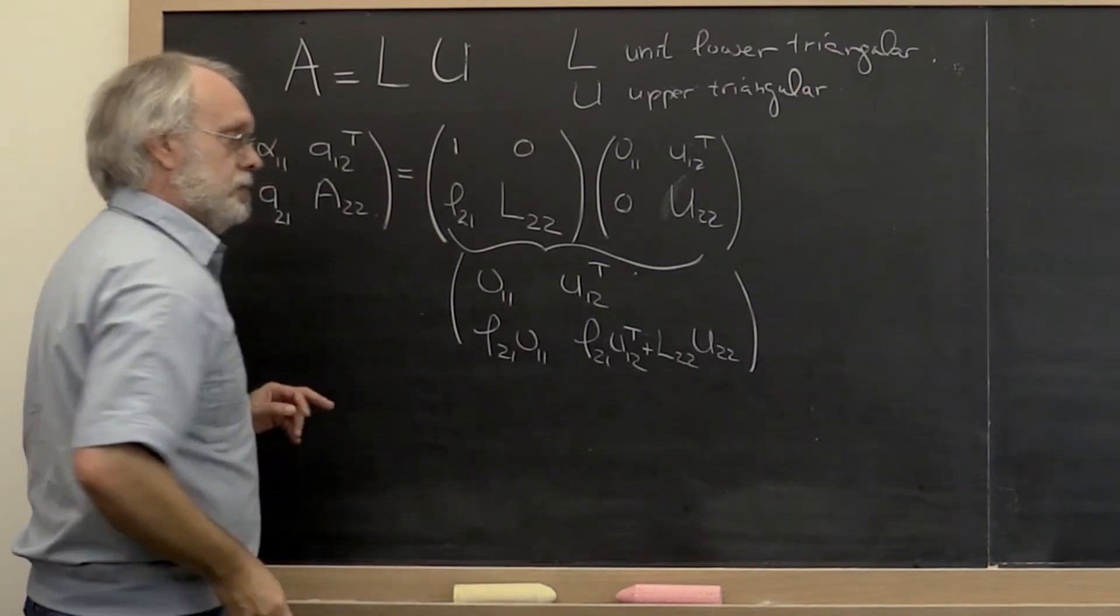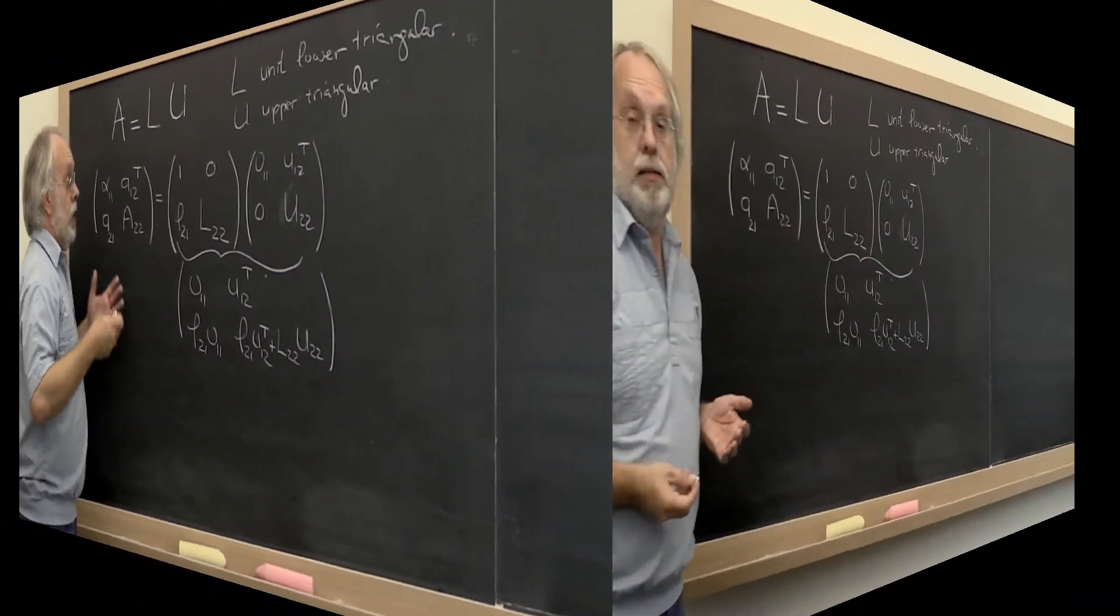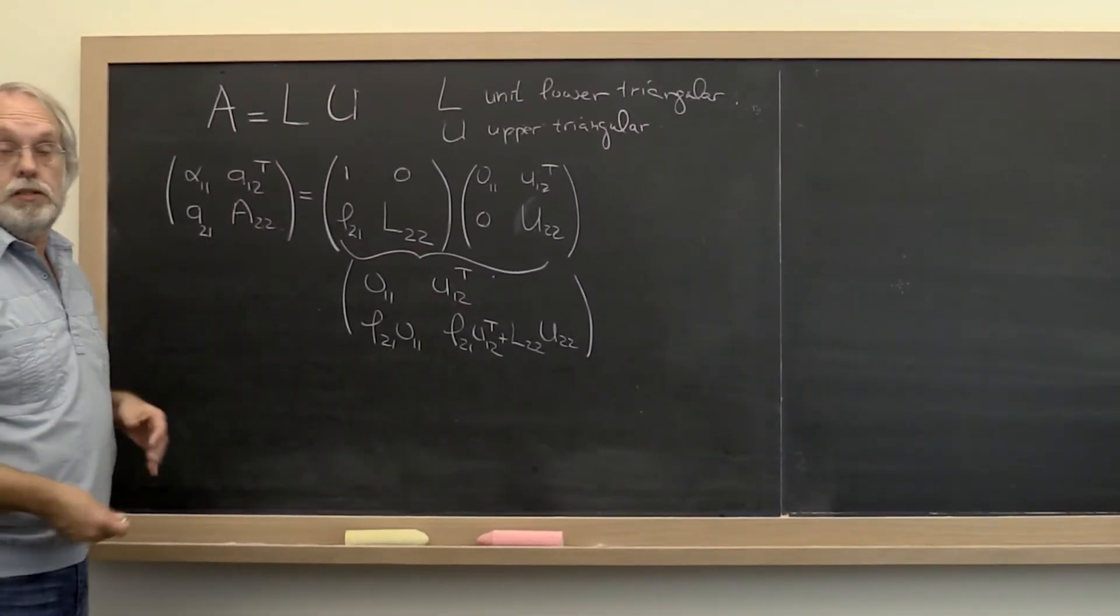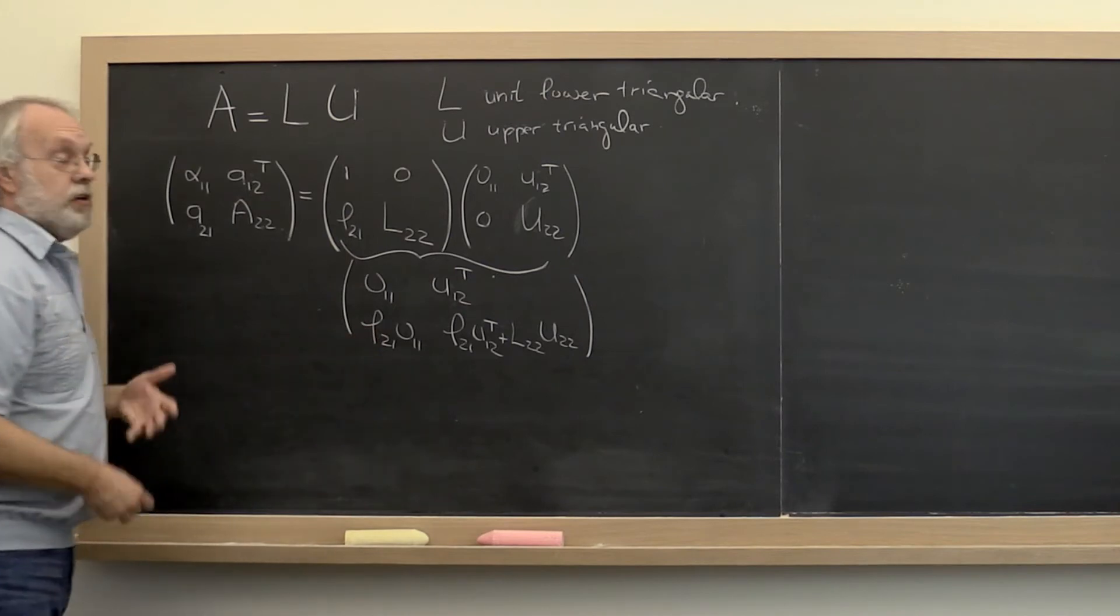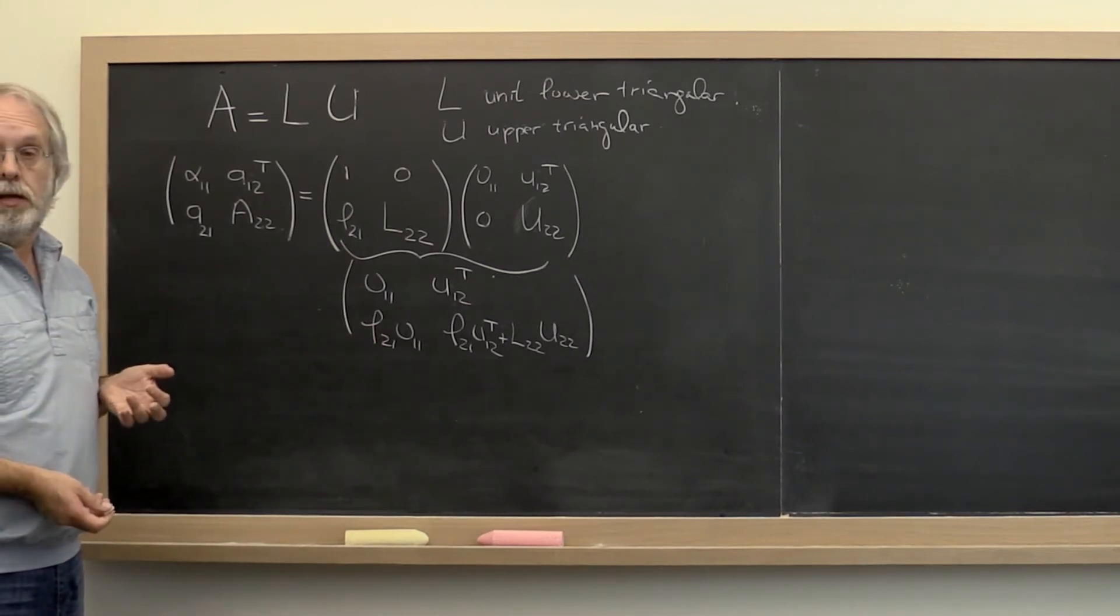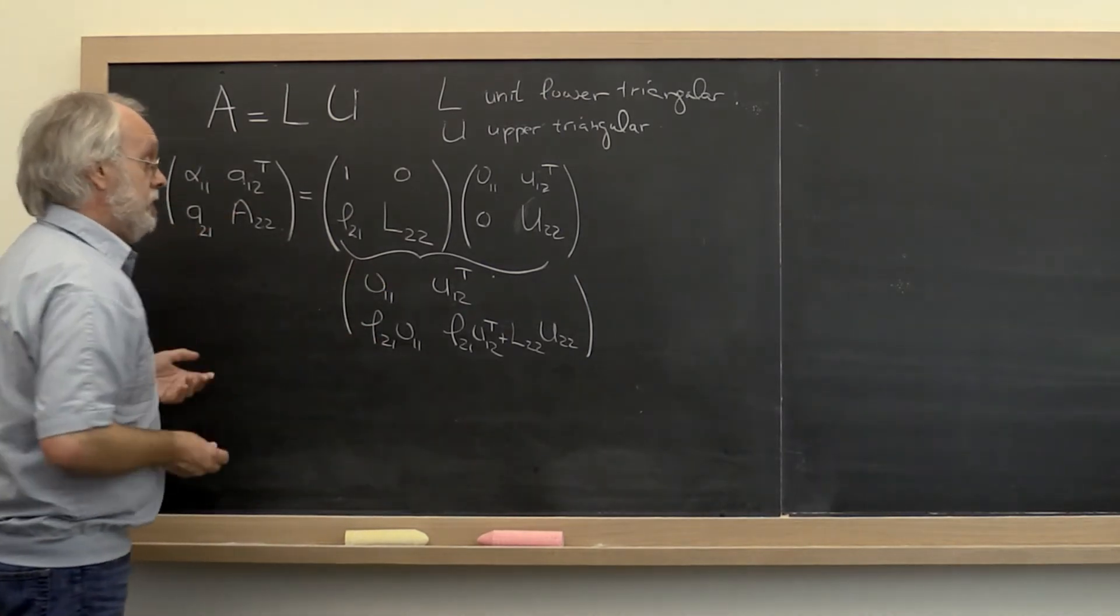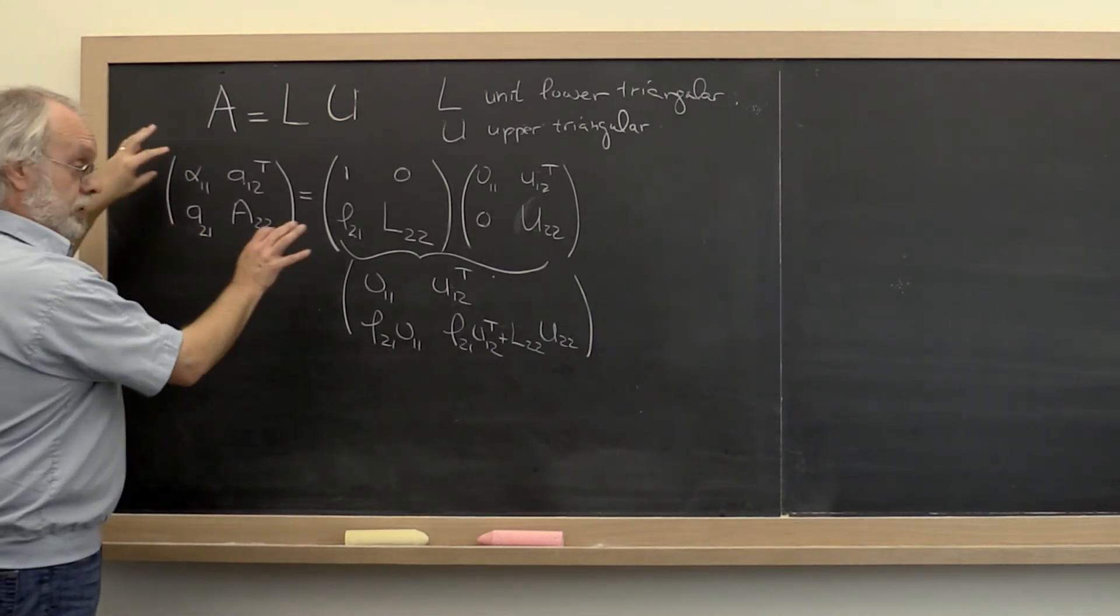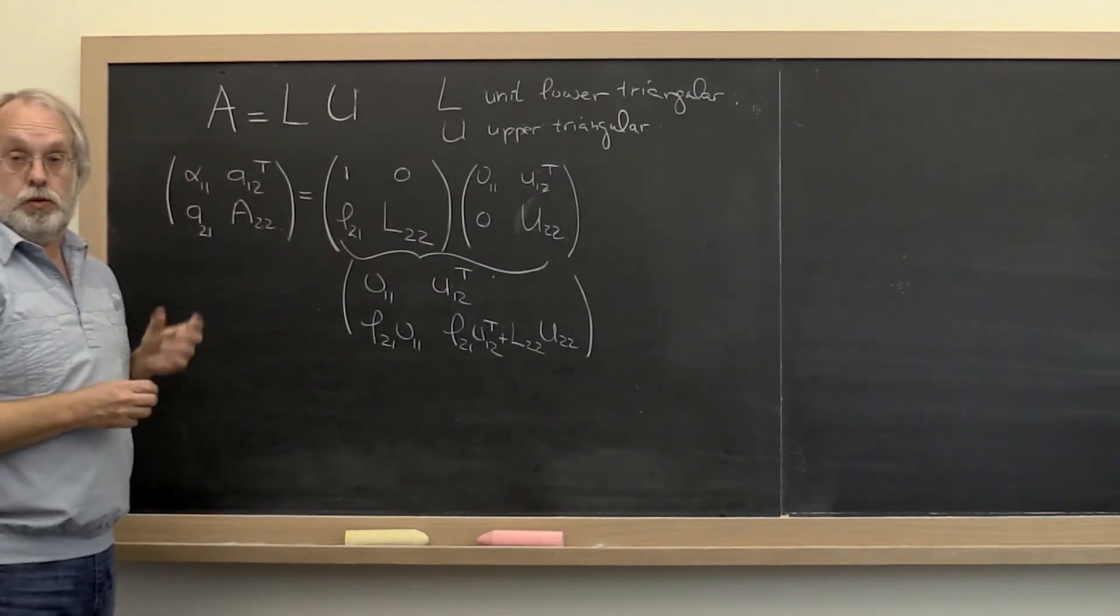So now we have another 2 by 2 blocked matrices. Two matrices are equal if their entries are equal. If you partition two matrices the same way, then the different parts must be equal, the corresponding parts.